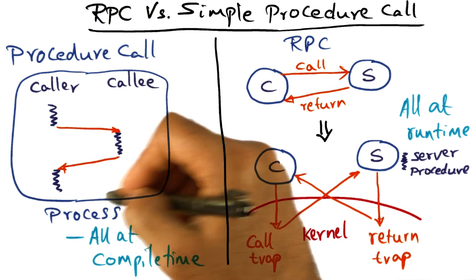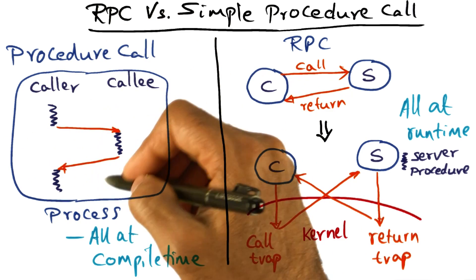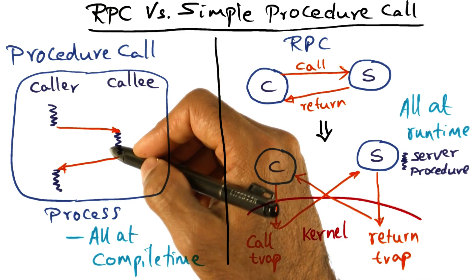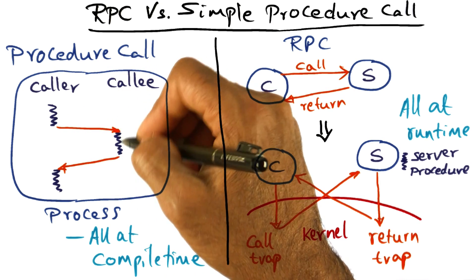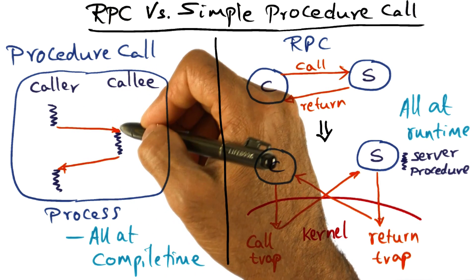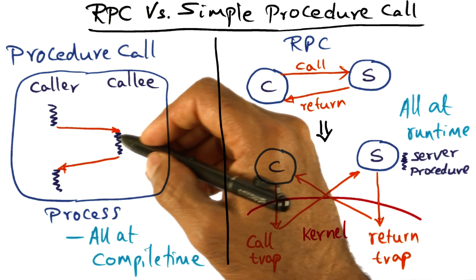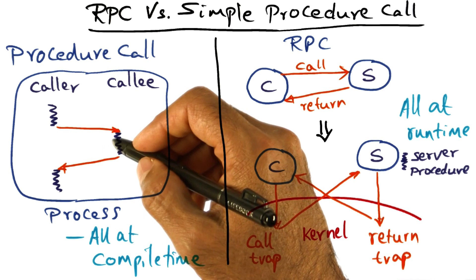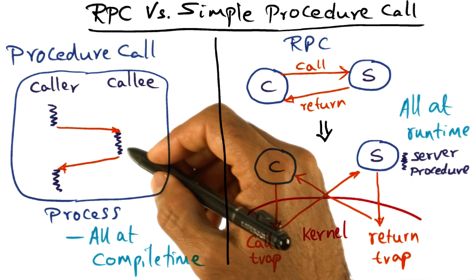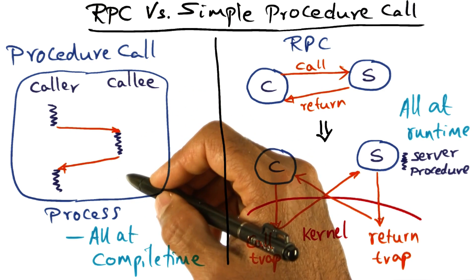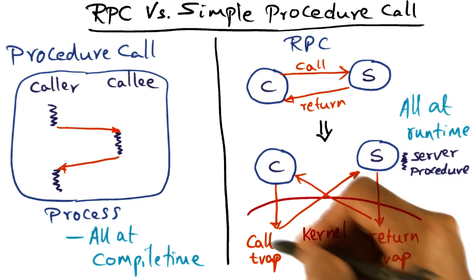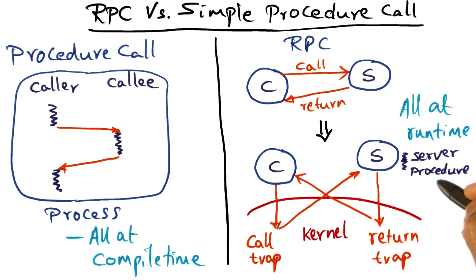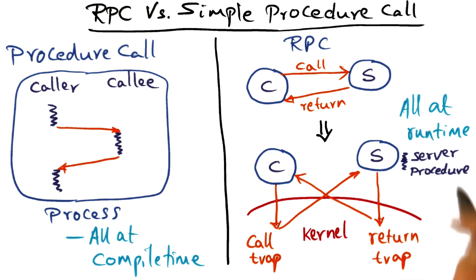If you go back to the analogy of a procedure call, the nice thing about it is that the arguments are set up on the stack, and that might involve some data movement, but there is no kernel involvement in the data movement. And that's what we would like to be able to accomplish in the RPC world as well.